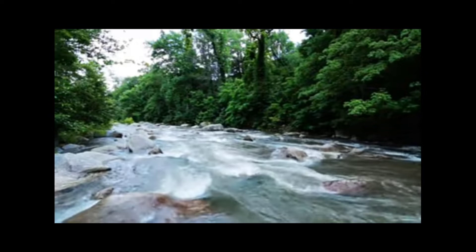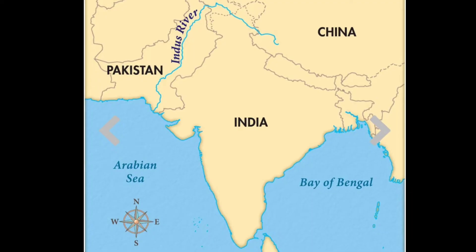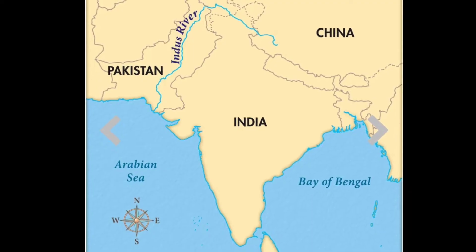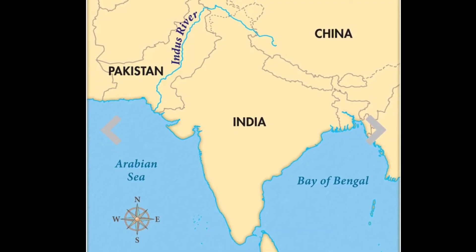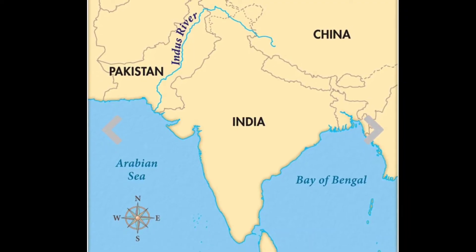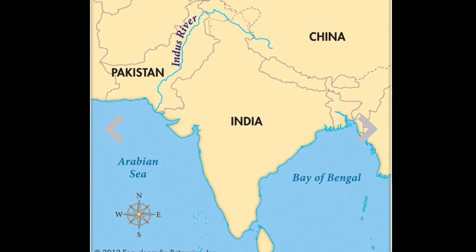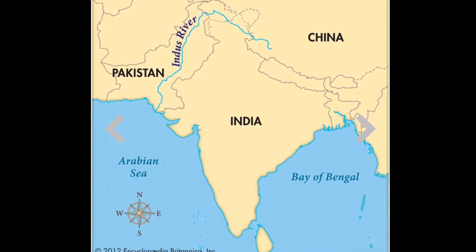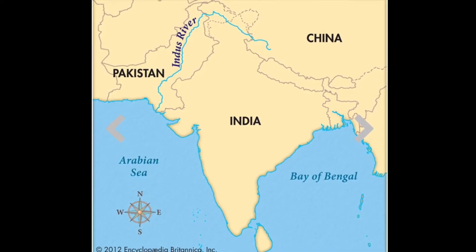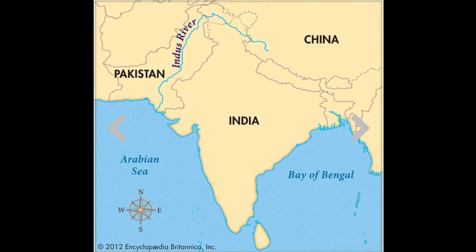First is the Indus River. Its origin is from Mansur River Lake and it merges into the Arabian Sea. It flows through the Union Territory of Ladakh, then enters Pakistan, and then merges into the Arabian Sea.